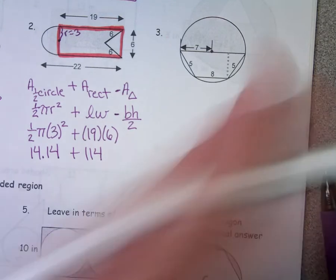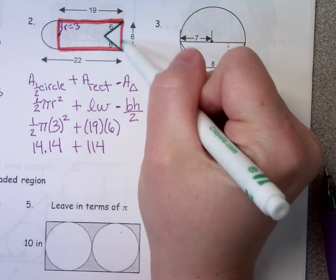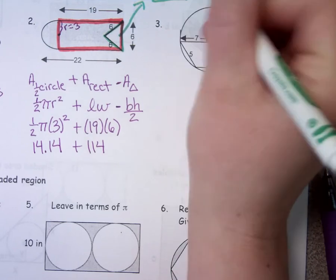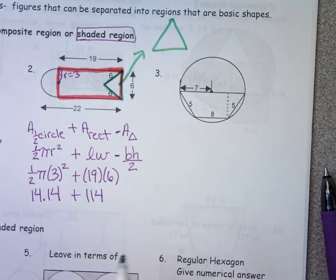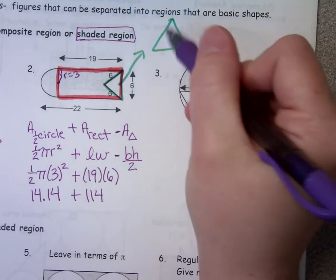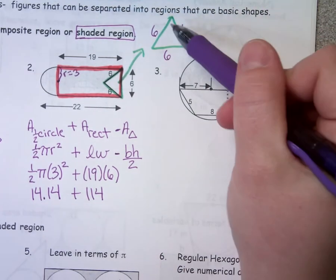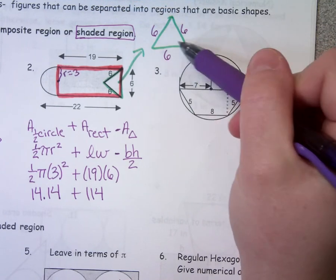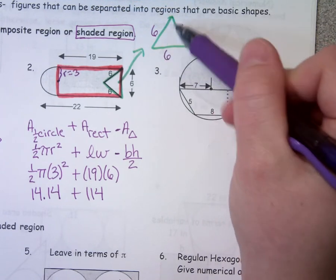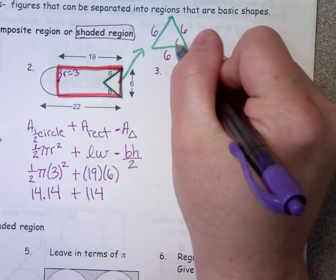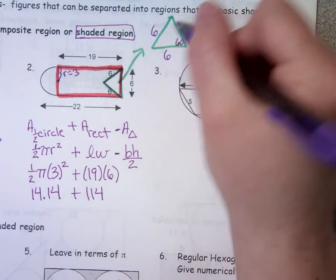Now I need to work on my triangle. I'm going to draw it off to the side. How long is every side of this triangle? Six. What kind of triangle is it if all the sides are the same? Equilateral. If all the sides are the same length, all the angles are the same measure. What are all the angles? 60, 60, and 60.